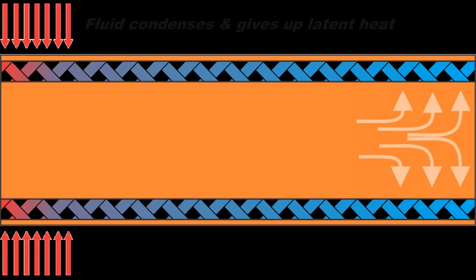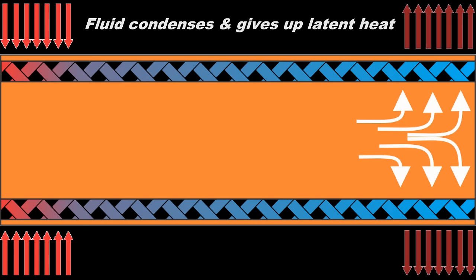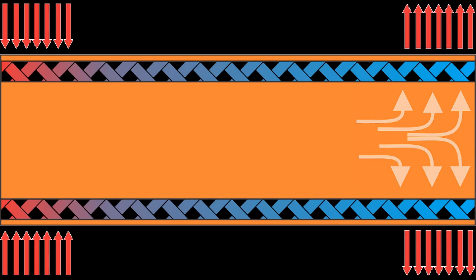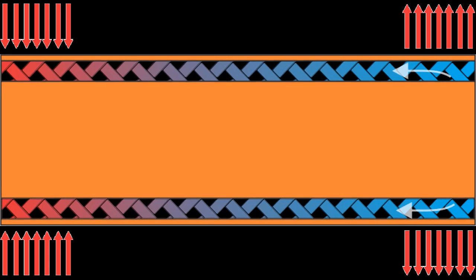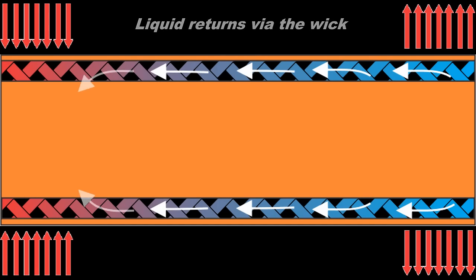At the opposite end, known as the condenser, the fluid gives up its latent heat, which is rejected to an external heat sink. The fluid then returns to liquid form, and the wick structure passively pumps the fluid back to the evaporator using capillary force.